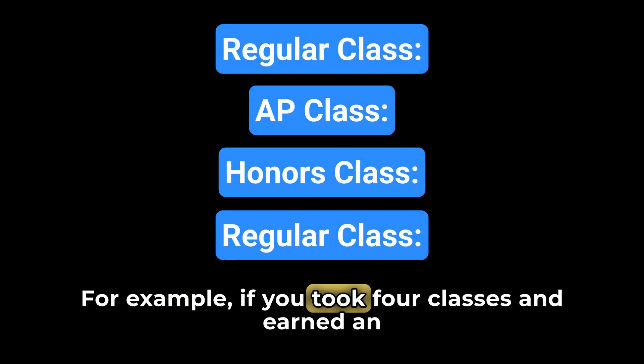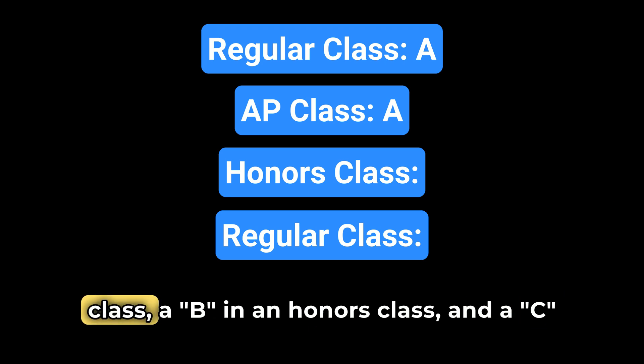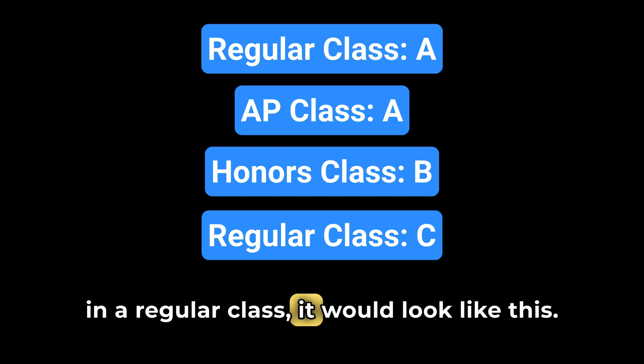For example, if you took four classes and earned an A in one regular class, an A in one AP class, a B in an Honors class, and a C in a regular class, it would look like this.